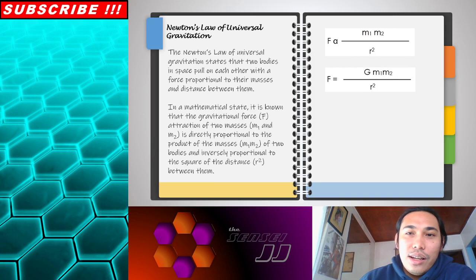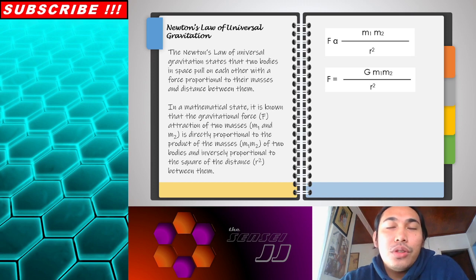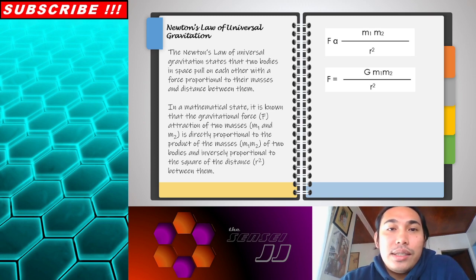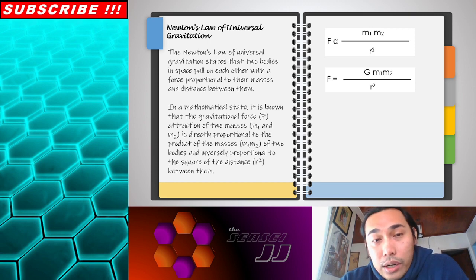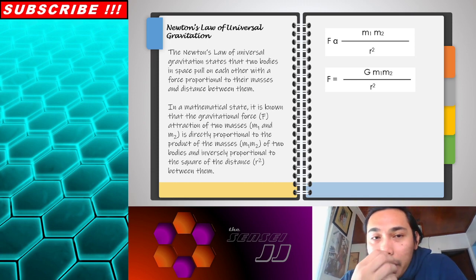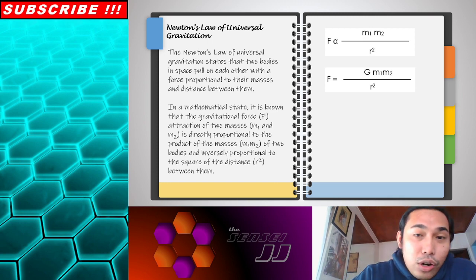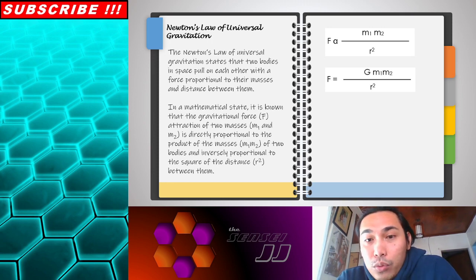Next is Newton's Law of Universal Gravitation. Newton's law states that two bodies in space pull on each other and the force is proportional to the product of the masses all over the distance squared between them. In mathematical form, F is directly proportional to M1 times M2 over R squared. From there on, we can rewrite it as this formula - F equals G M1 M2 over R squared.